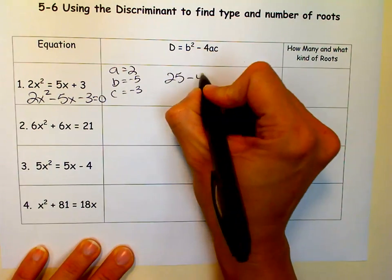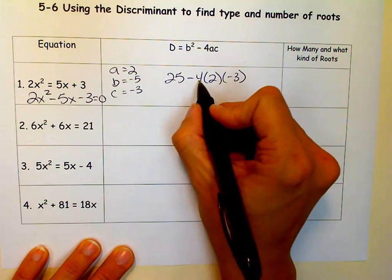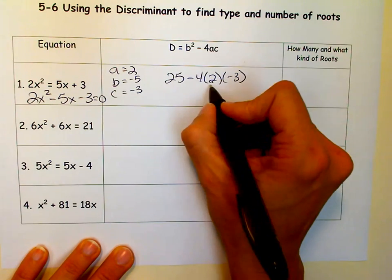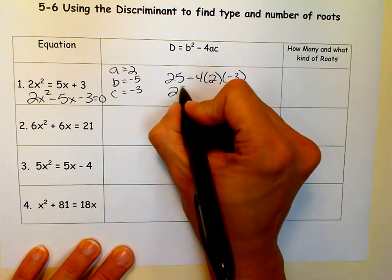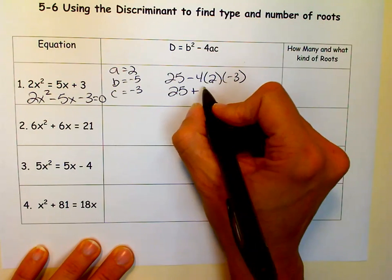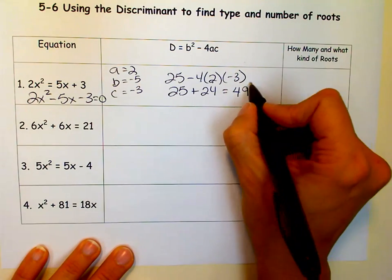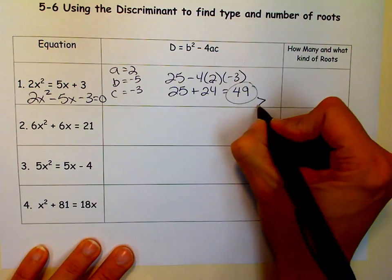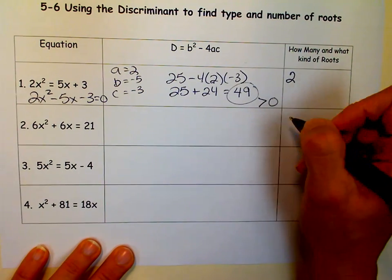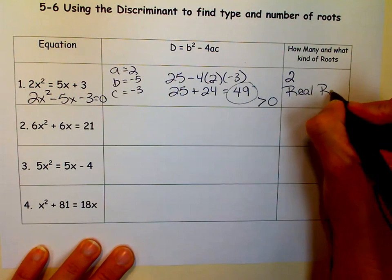And once I have my correct a's, b's, and c's, it's not that hard. I just square the b, which is 25, minus 4 times a times c. So 4 times 2 is 8, times 3 is 24. A negative times a negative is a positive. So I get 25 plus 24, which is 49. Now 49 is greater than 0, so I know I have two roots. And because it's a perfect square, I have two real rational roots.